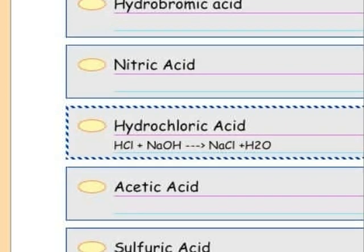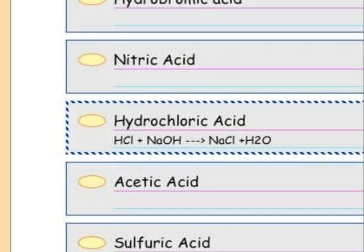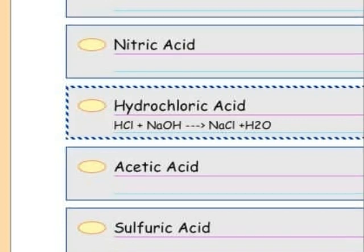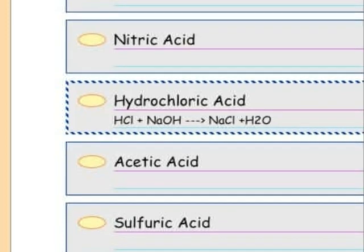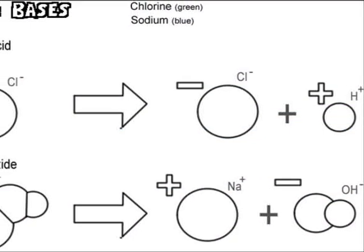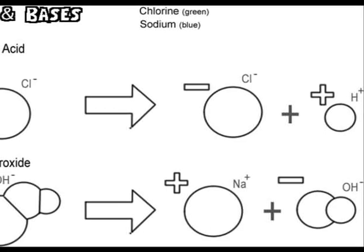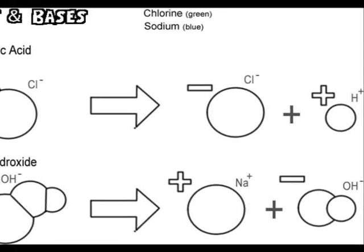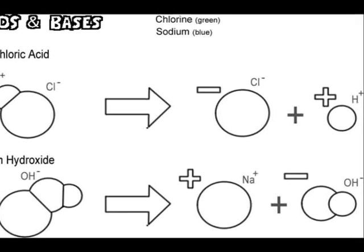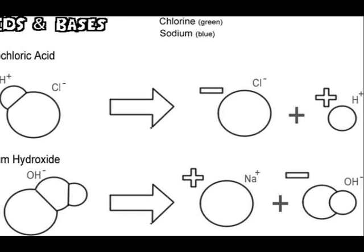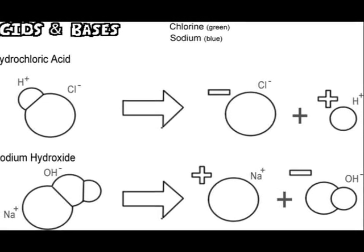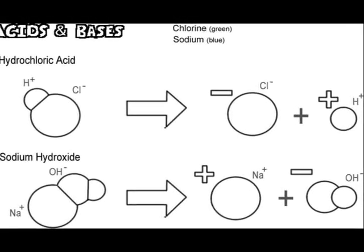If I choose hydrochloric acid and sodium hydroxide, I know that they will yield sodium chloride and water. The acid donates its hydrogen atom and the base accepts it. When the base accepts the hydrogen atom, it lets go of the sodium molecule. The sodium and chloride ions bond, and the hydrogen and hydroxide ions bond to form water.